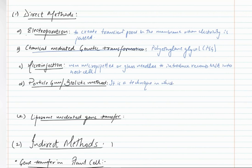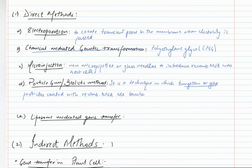Next we have the particle gun, or the gene gun, or the biolistic method. It is a technique in which tungsten or gold particles coated with recombinant DNA or foreign DNA are bombarded onto target host cells. Tungsten and gold are heavy particles, so when the foreign DNA is coated on these particles and they are thrown at high speed towards the host cell, the foreign DNA is automatically introduced inside the host cell.